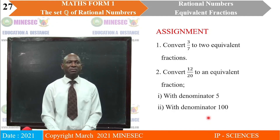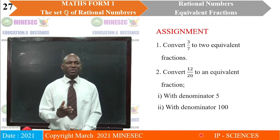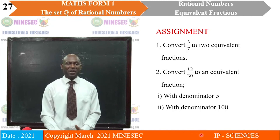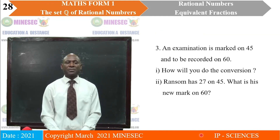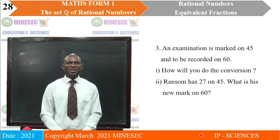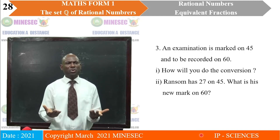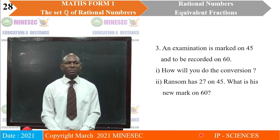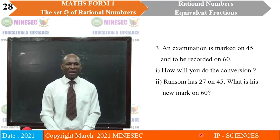Assignment. One: convert three on seven to two equivalent fractions. Two: convert twelve on twenty to an equivalent fraction — first with denominator five, second with denominator one hundred. Three: an examination is marked on forty-five and to be recorded on sixty; (a) how will you do the conversion, and (b) Ransom has twenty-seven on forty-five — what is his new mark on sixty? Four: two classes A and B of forty-eight students each are divided such that A has eight equal groups and B has six equal groups — what fractions of A and B are equivalent?